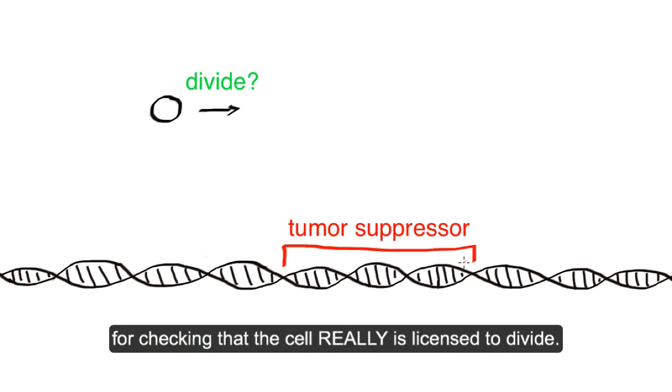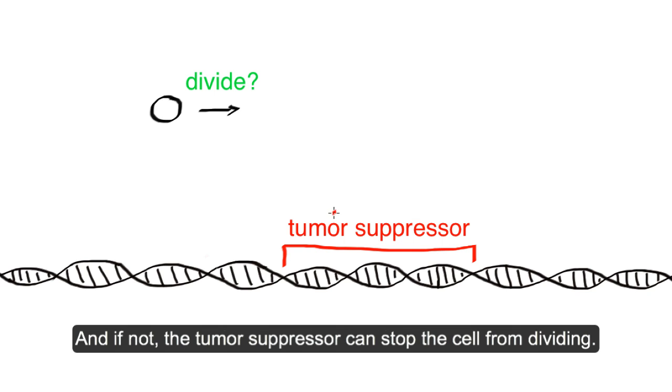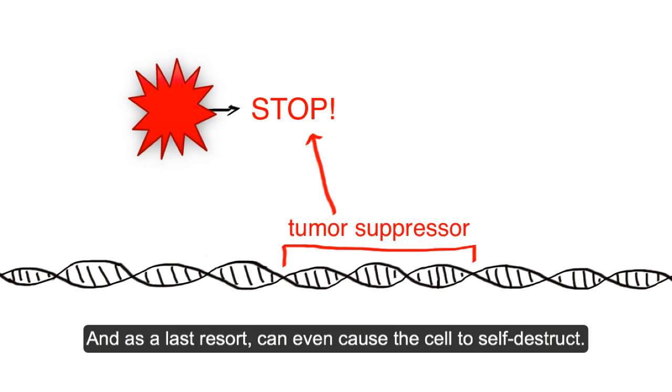And they are responsible for checking that the cell really is licensed to divide. And if not, the tumor suppressor can stop the cell from dividing. And as a last resort, can even cause the cell to self-destruct.